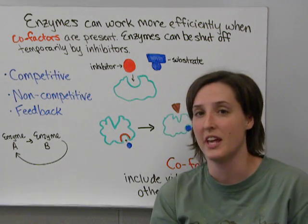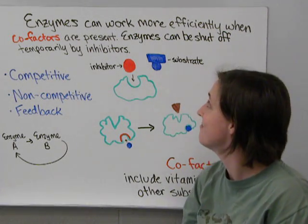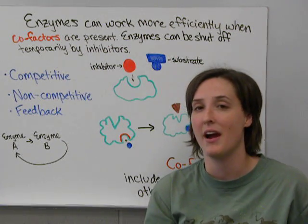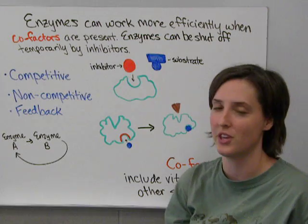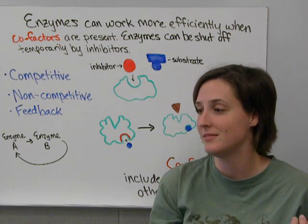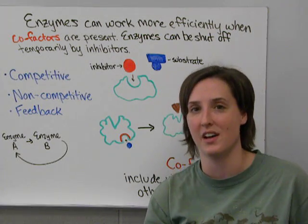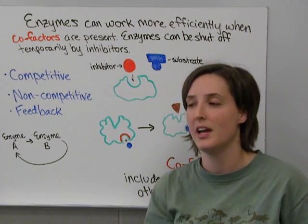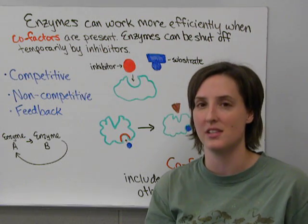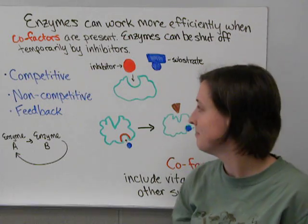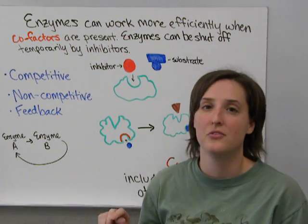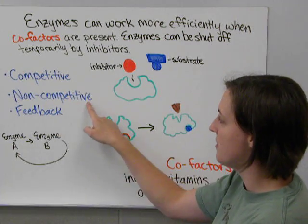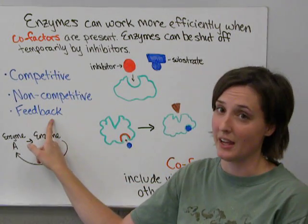Enzymes can work more efficiently when cofactors are present. Enzymes can also be shut off temporarily by inhibitors — molecules that turn off enzymes so they don't work, because there are certain times when the enzyme is needed and certain times when it is not. There are three kinds of inhibitors: competitive inhibitors, non-competitive inhibitors, and feedback inhibitors.